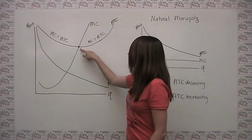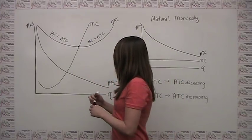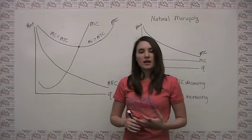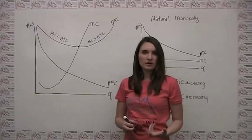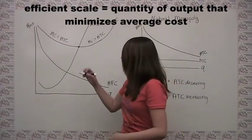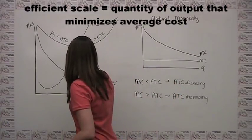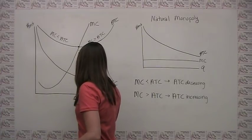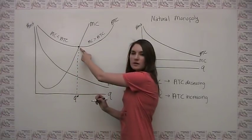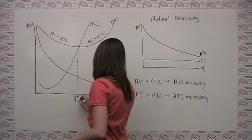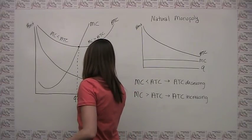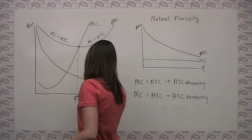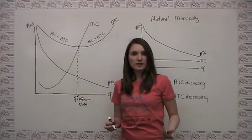It's also worth noting that the quantity that minimizes average total cost is called the efficient scale of production. The quantity Q that corresponds to the bottom of our average total cost curve is equal to the efficient scale for this particular company or production process.